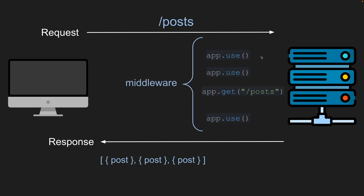So what is middleware? Middleware is any code that runs in between the request and response. The request will come in and go to the first piece of middleware we define, then go to the next, and so on. In Express, we can define middleware by calling the `use` method. If we don't pass in a path, the middleware will run on all requests. Our route controllers are actually technically middleware too, because they run in between the request and response.